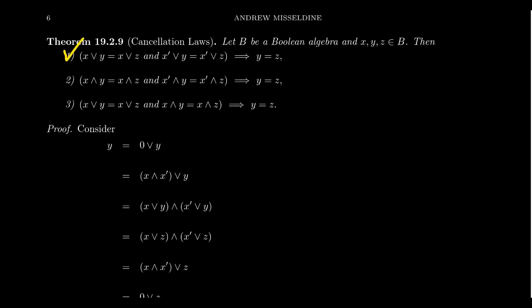The second cancellation law doesn't require a new proof because it is the dual statement of the first one. Take the proof we just saw, take its dual, and that gives the proof of the second cancellation law.